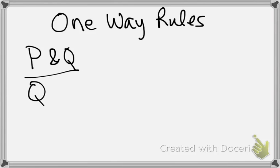Likewise, if we have the statement Q, then we can know that P or Q is true. But we can't go vice versa. If we know that P or Q is true, we can't know that Q is true. So these rules go one way.